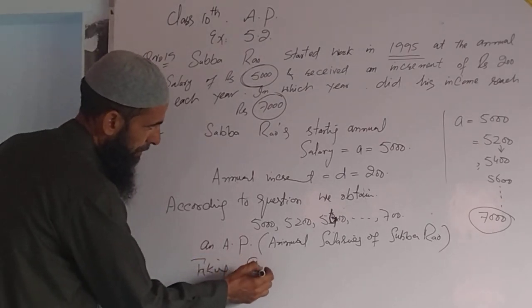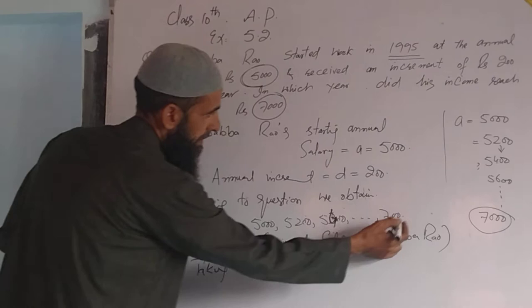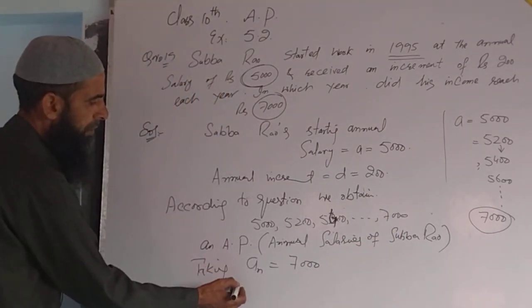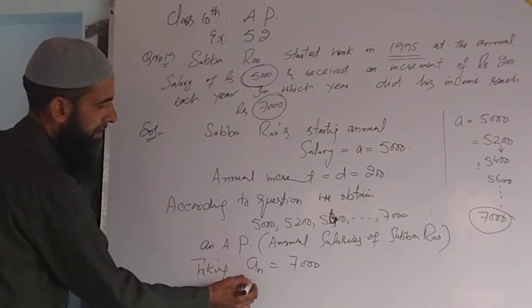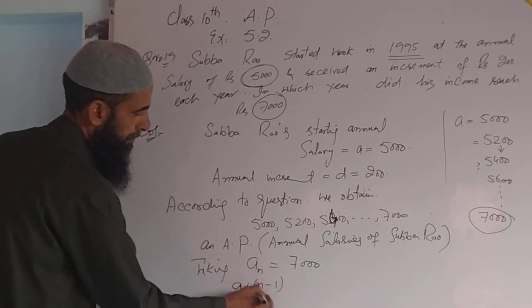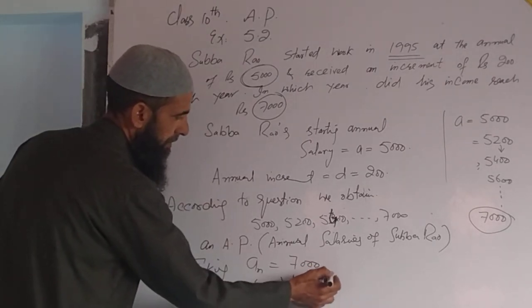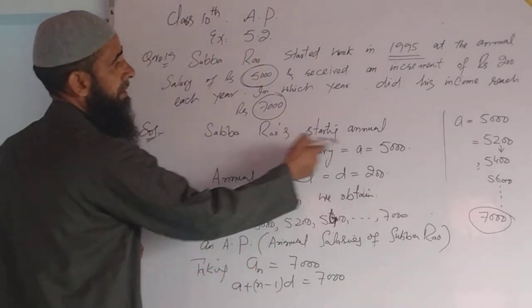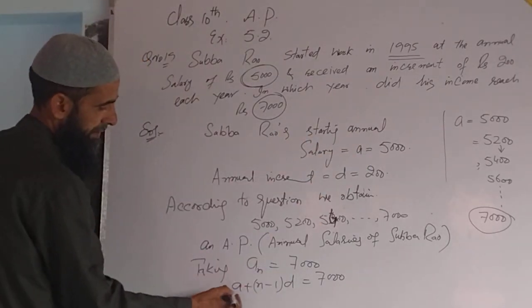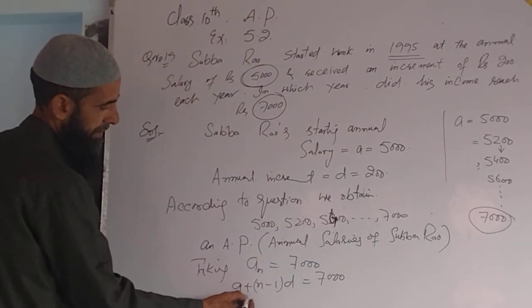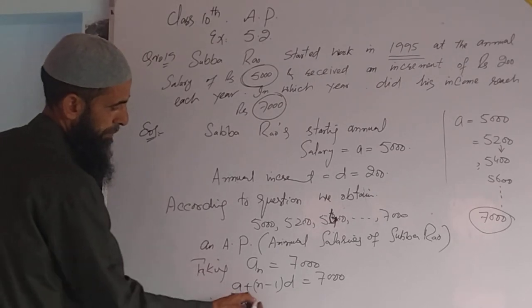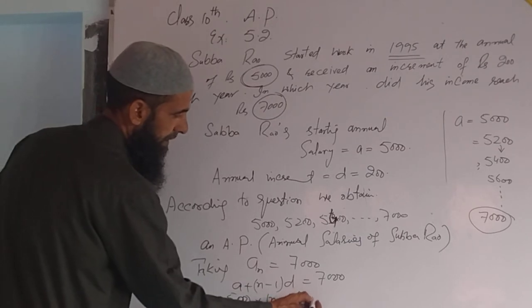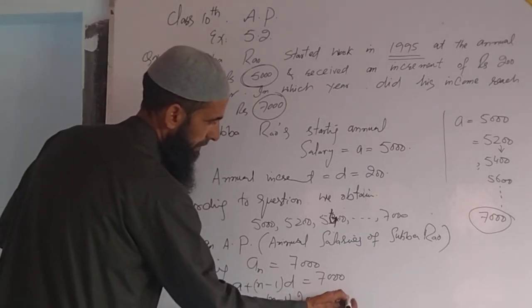Taking AN equal to 7000. Now, AN equals A plus (N minus 1) into D, which equals 7000. Substituting: 5000 plus (N minus 1) into 200 equals 7000.